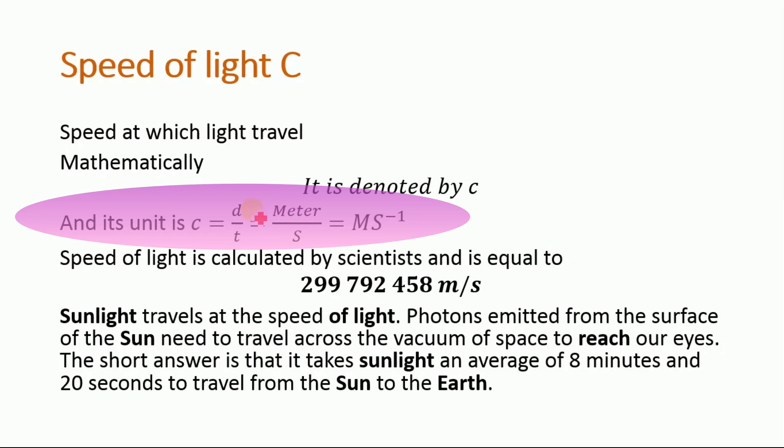So the unit of distance is meter and the unit of time is second. So the speed is meter per second, and the unit of speed of light is meter per second similar to that of speed.